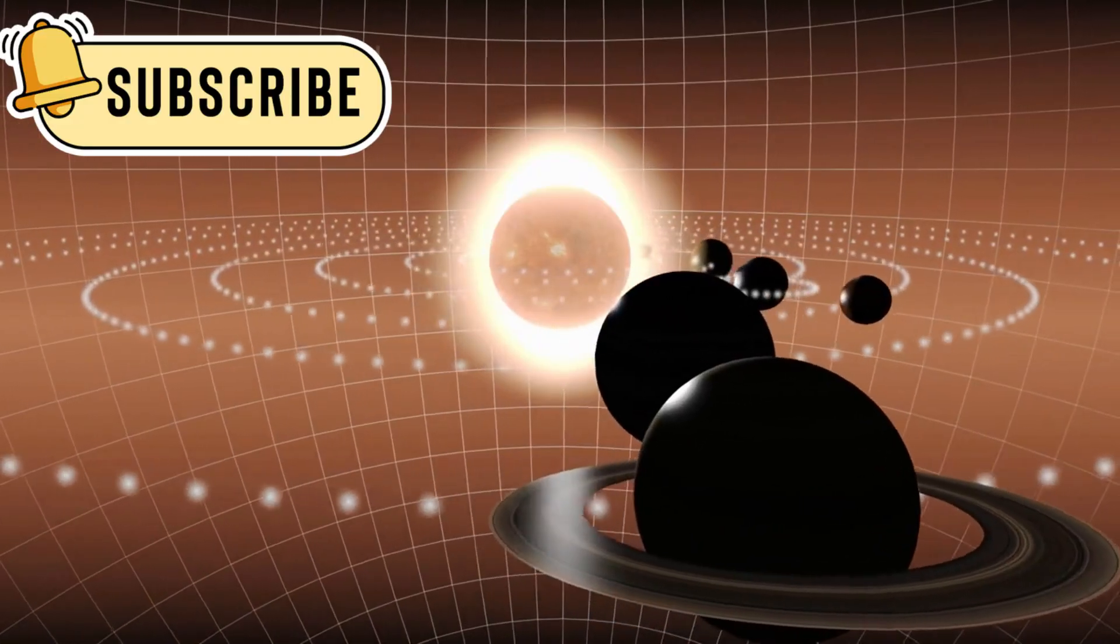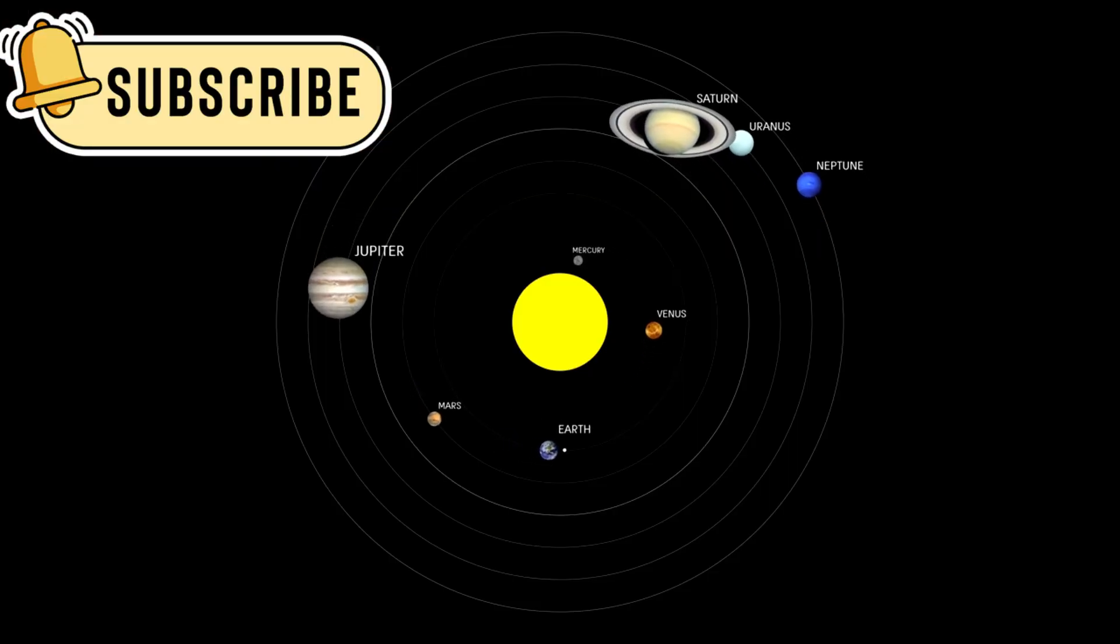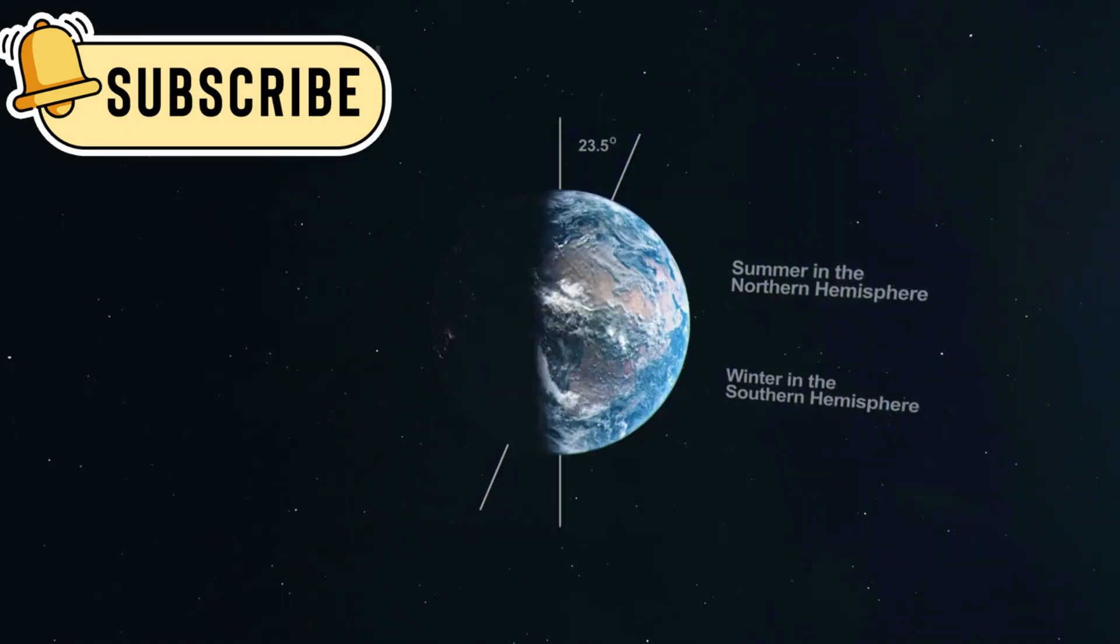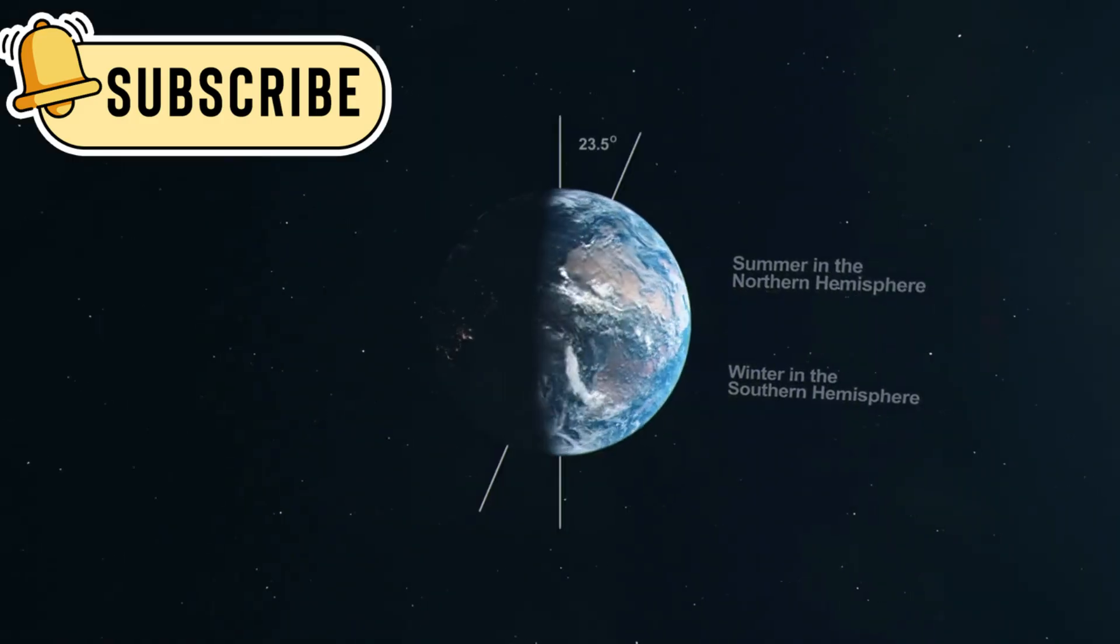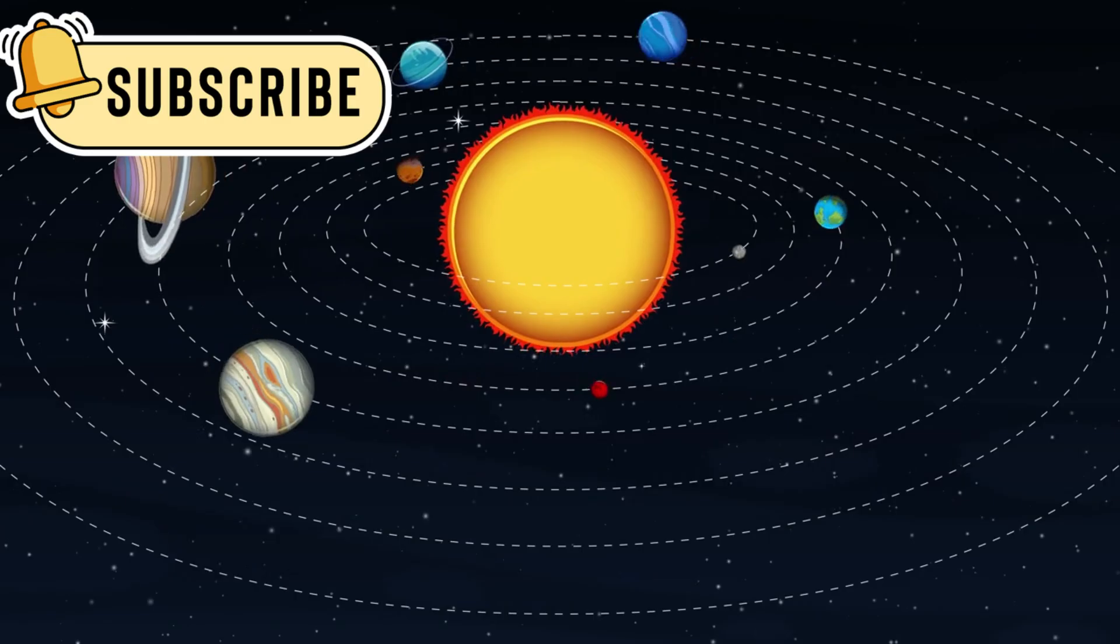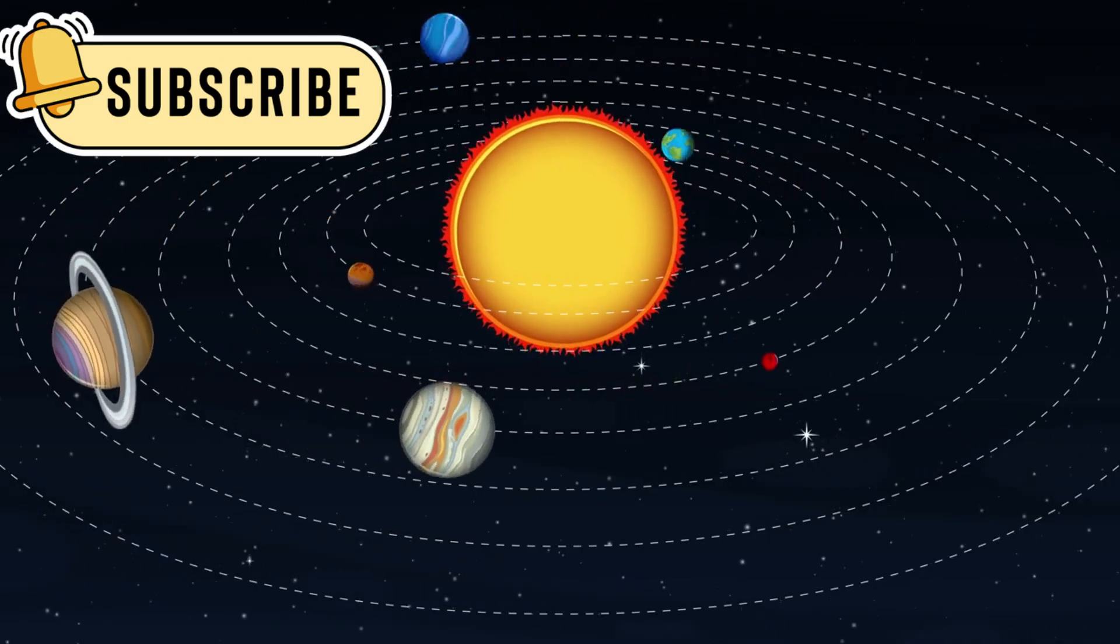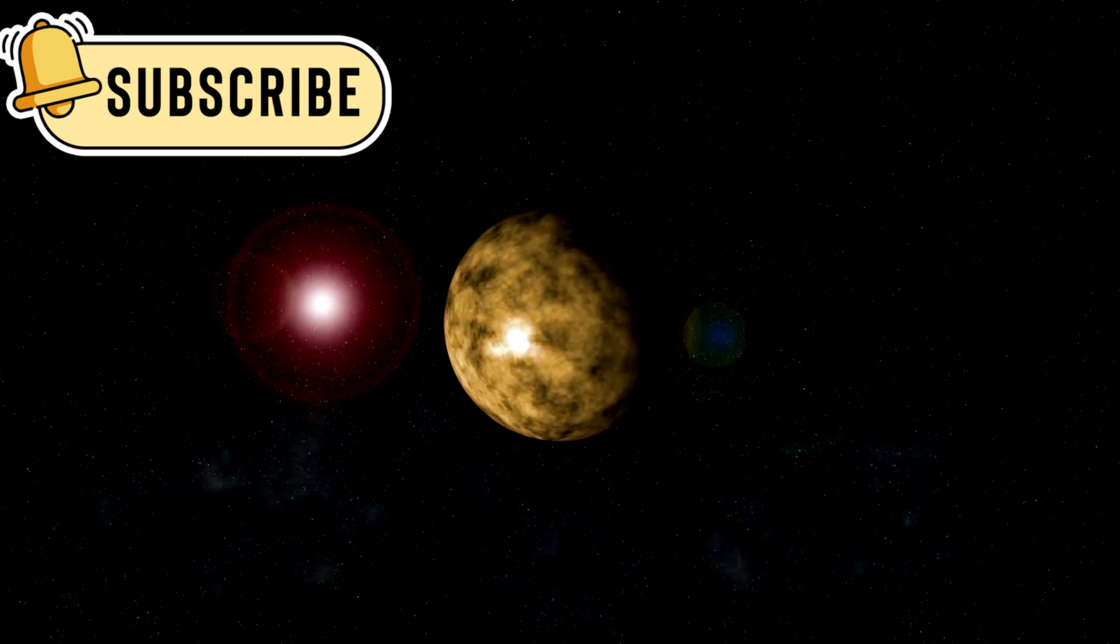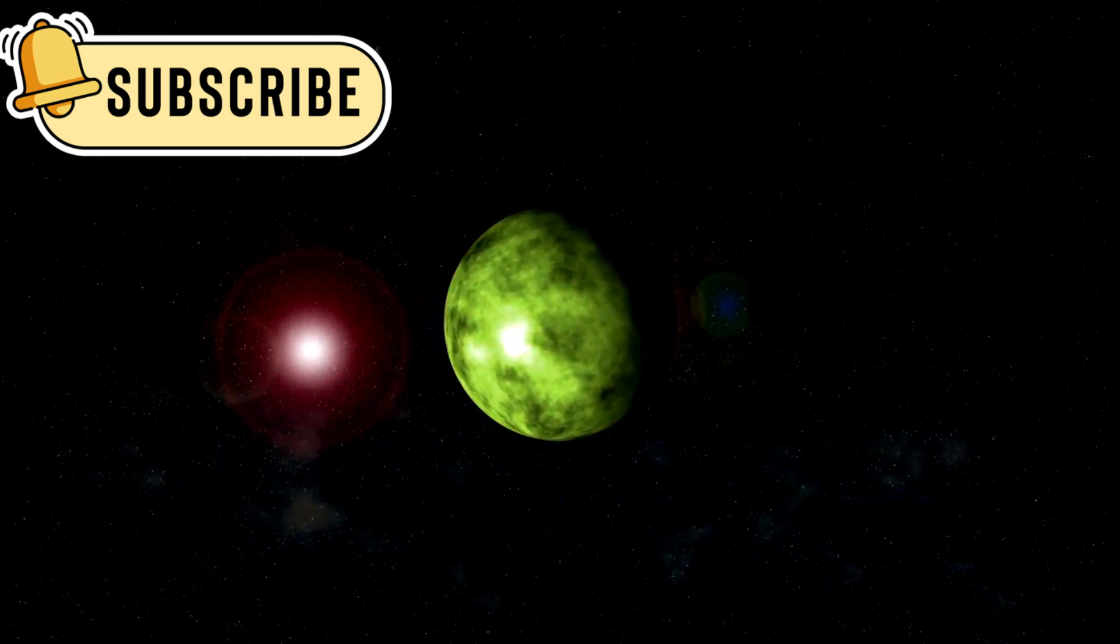Pluto's orbit is far from normal. It doesn't follow a flat path around the Sun like the major planets. Instead, it takes a tilted and stretched route. Its orbit is so long that Pluto takes 248 Earth years to go around the Sun once. That means since it was discovered in 1930, it hasn't completed one full trip.